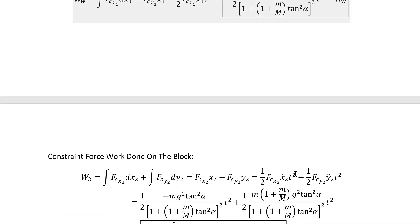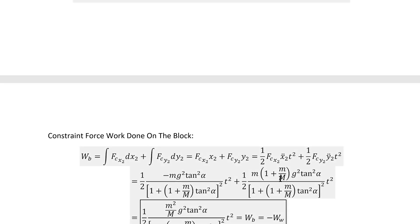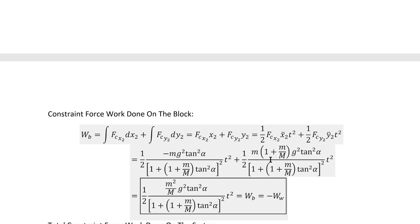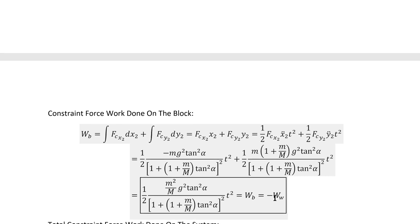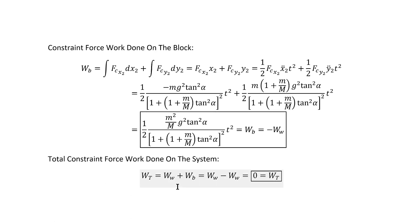The block moves in two dimensions, so we've got to do two integrals. Doing those integrals proceeds exactly the same way, and at the end of it, once we combine the two terms that we get from the two separate integrals, we do find that it actually is the negative of the work done on the wedge. Therefore the total work done on the system by the constraint forces does in fact work out to be zero, at least for this system.